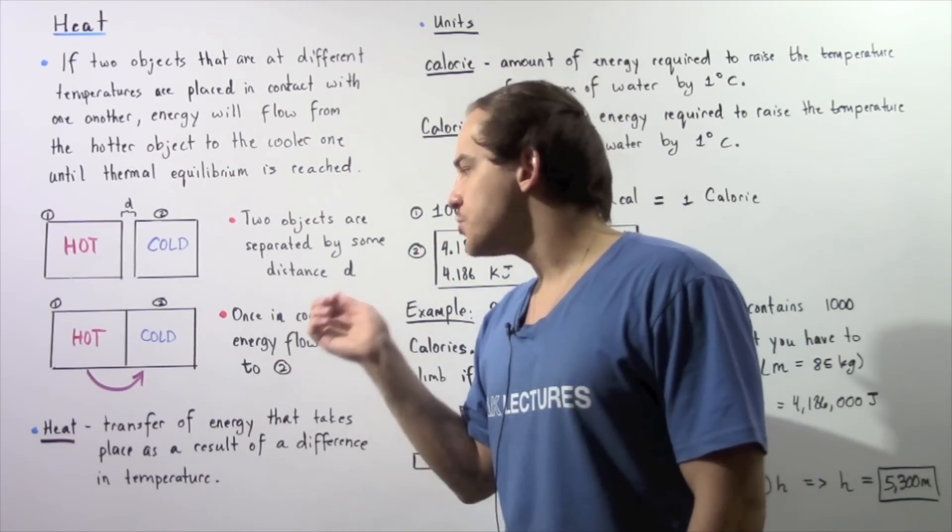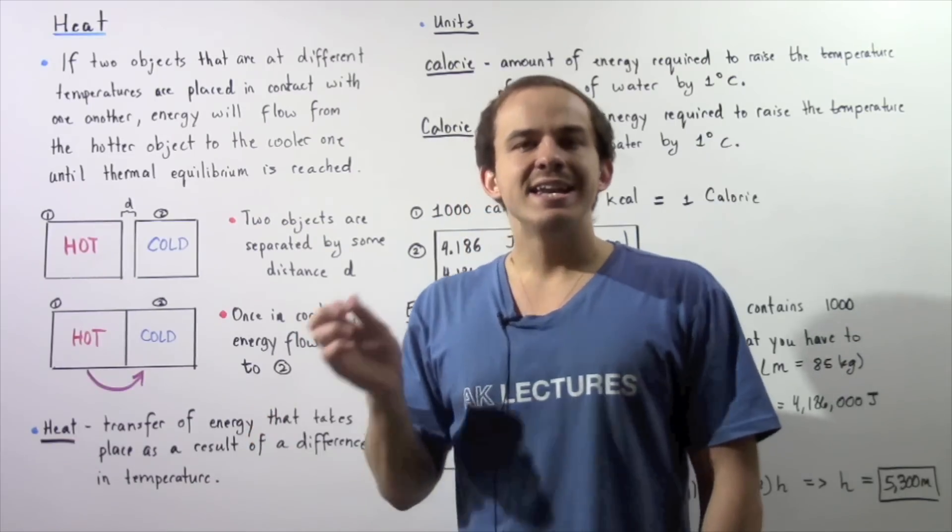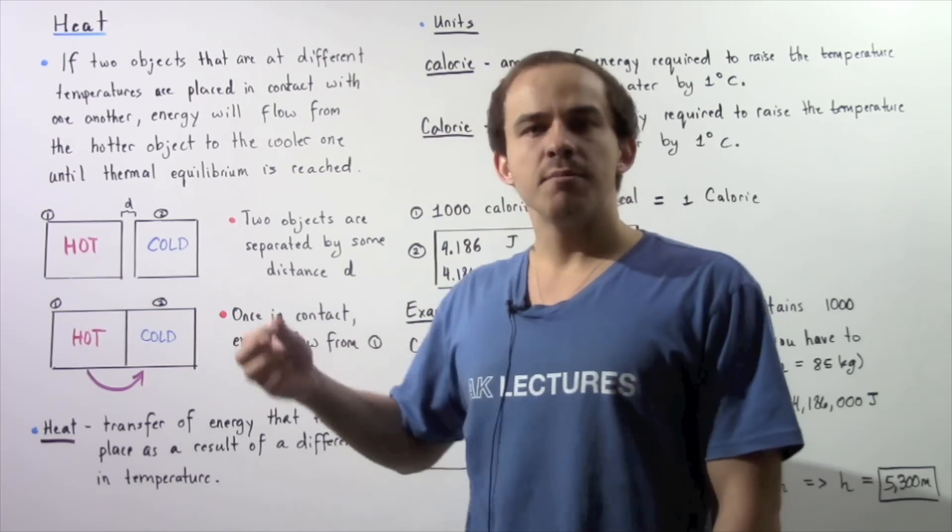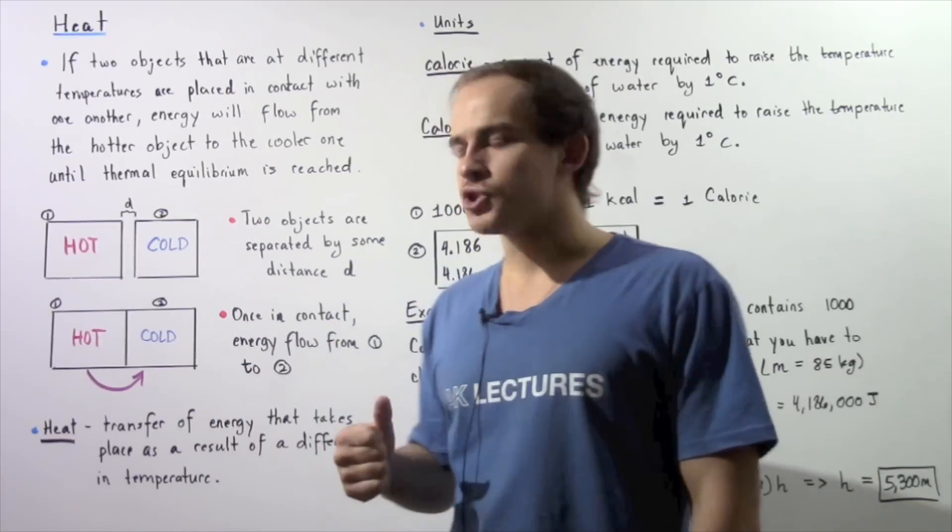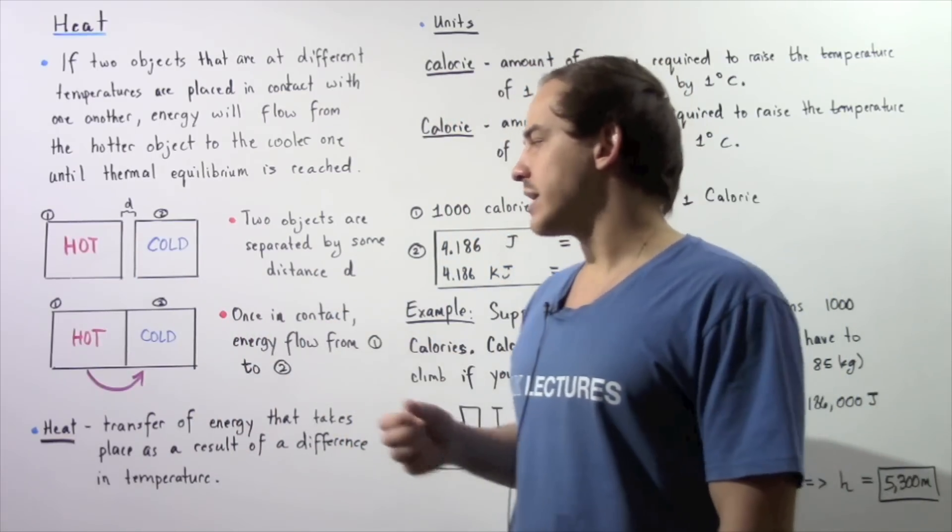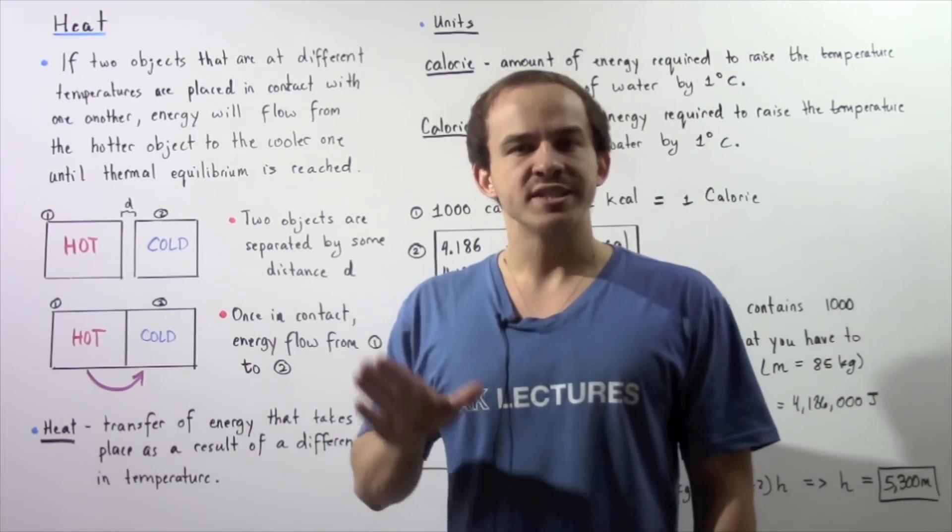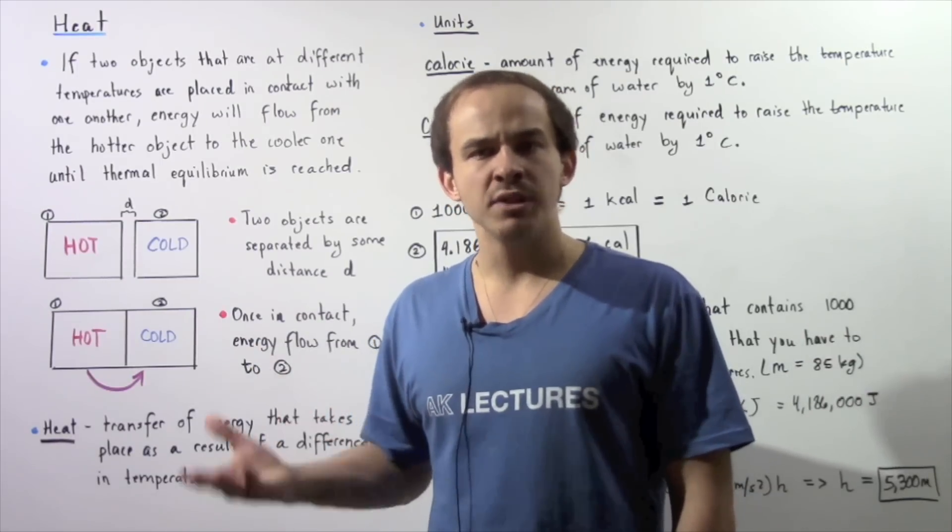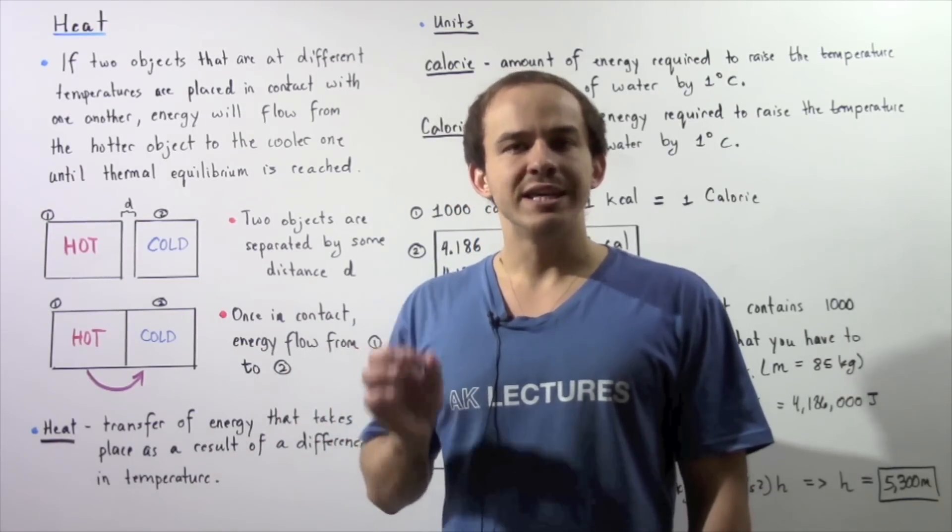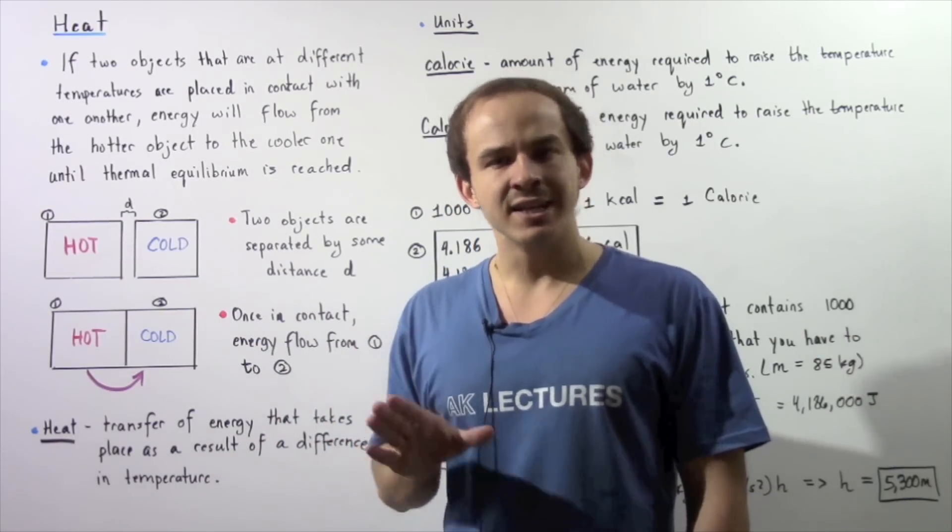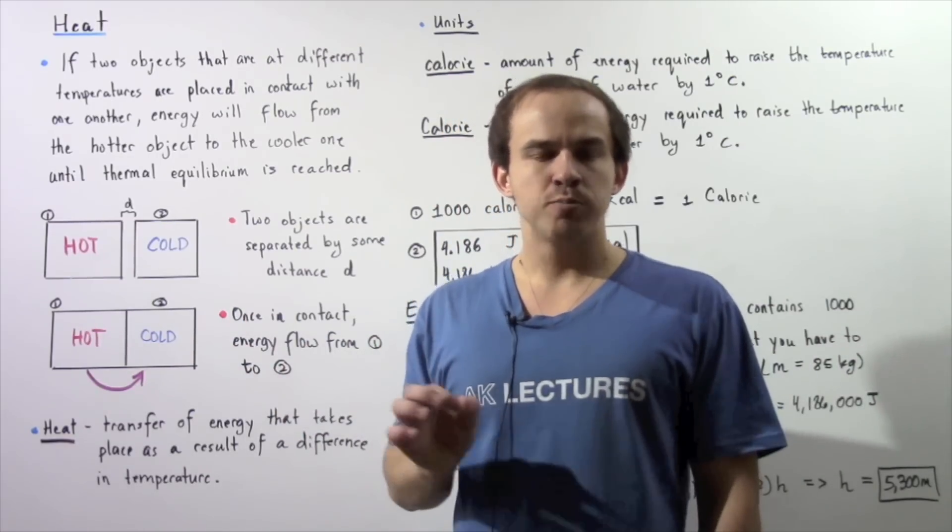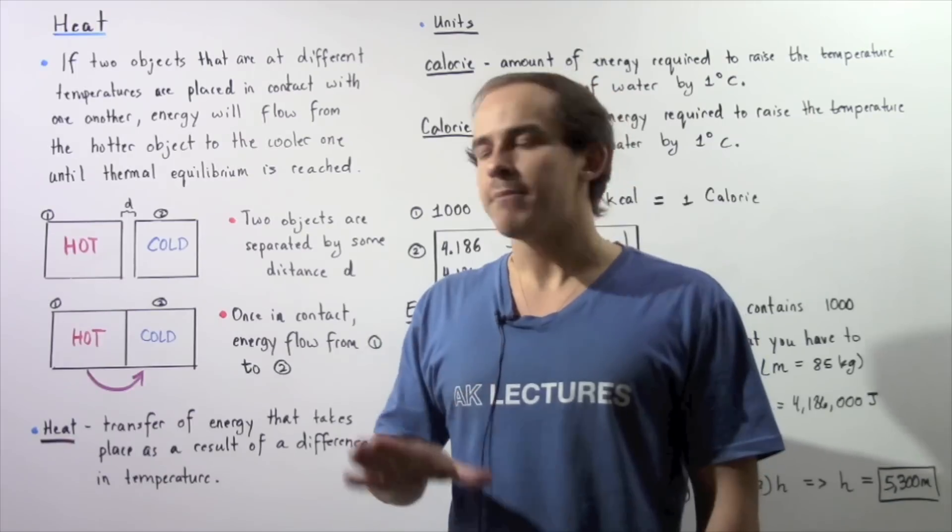Now my objects are in contact and energy will begin to flow from the hotter object, from the object with the higher temperature, to the cooler object, to the object with the lower temperature. This energy transfer will continue to take place until thermal equilibrium is reached, until they reach the same exact temperature, at which point energy will stop flowing.